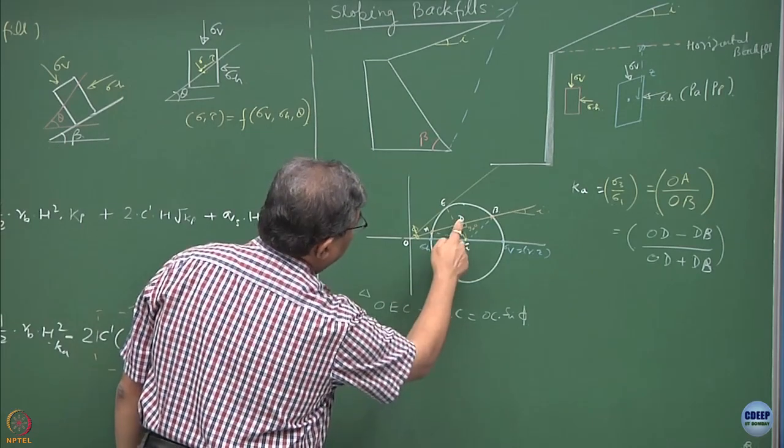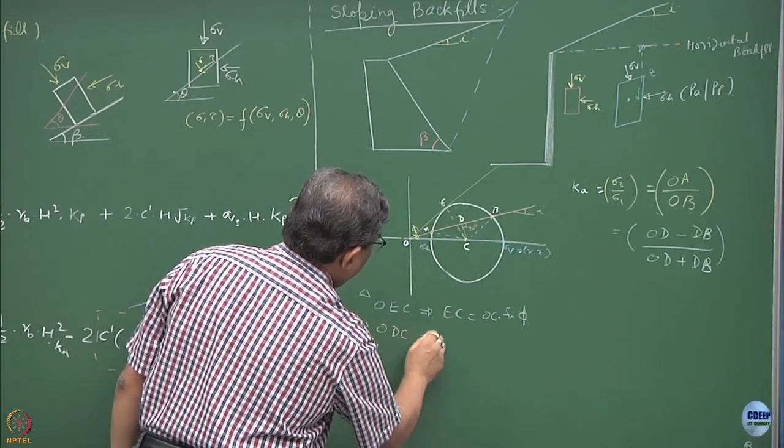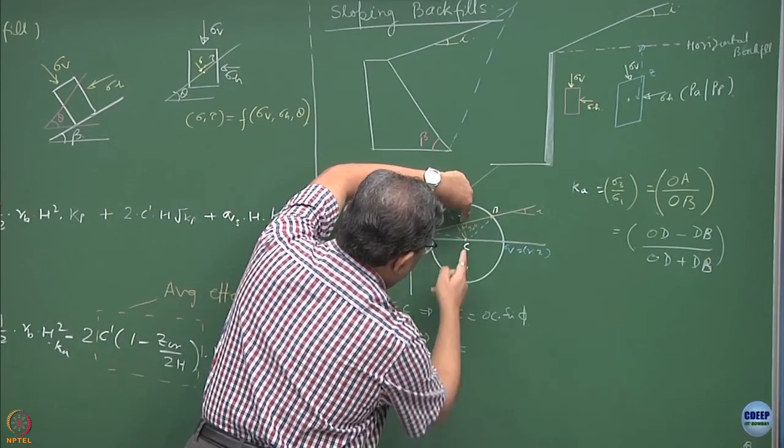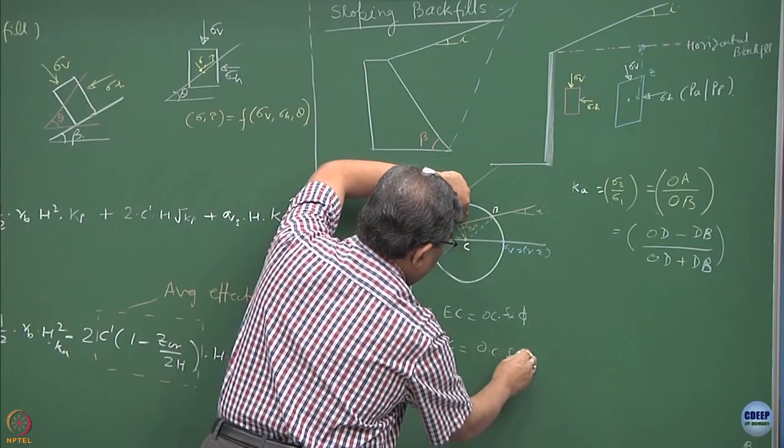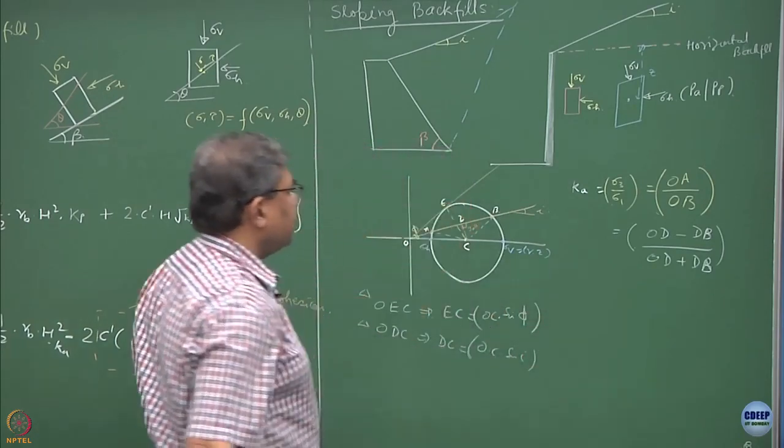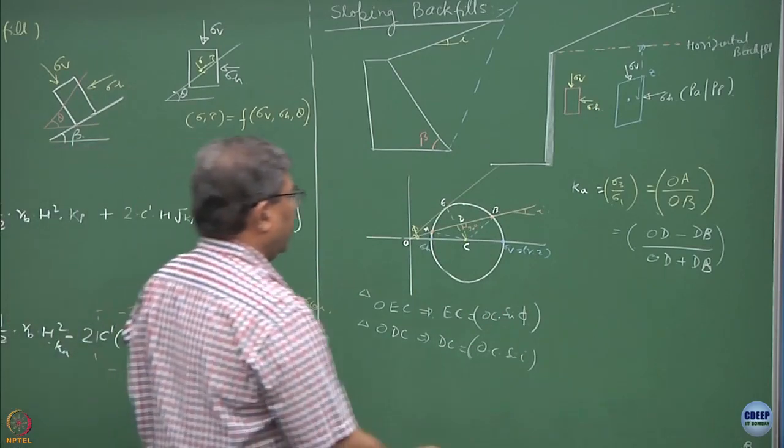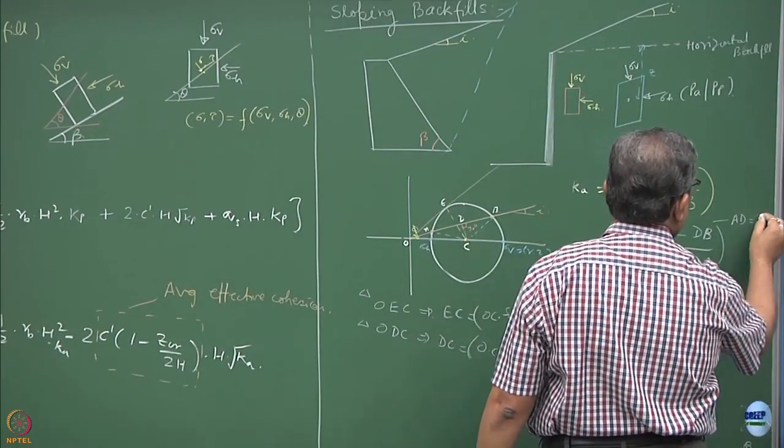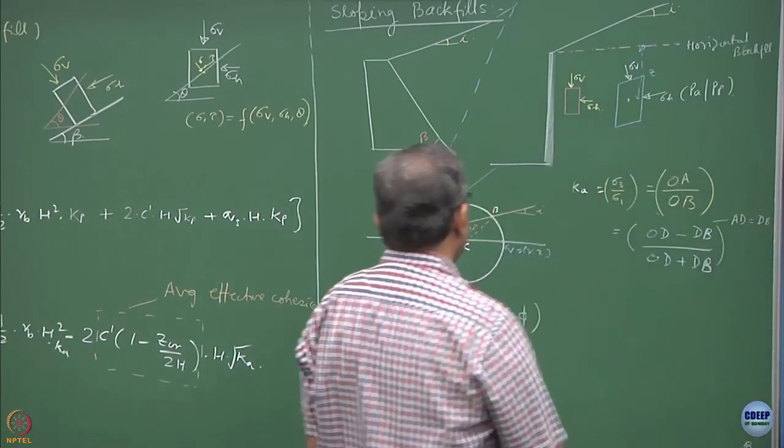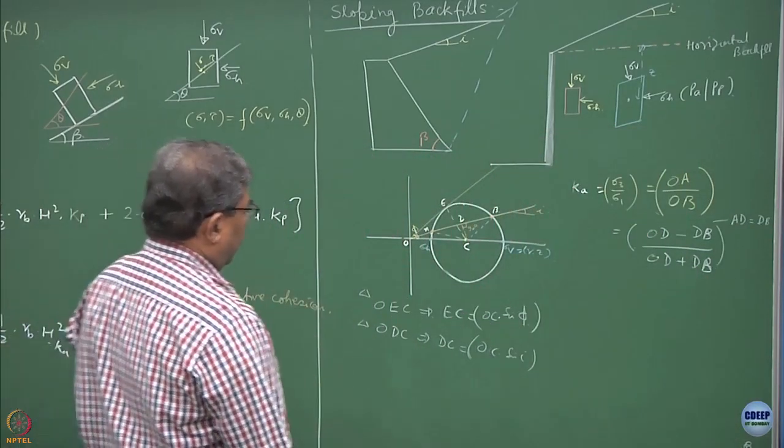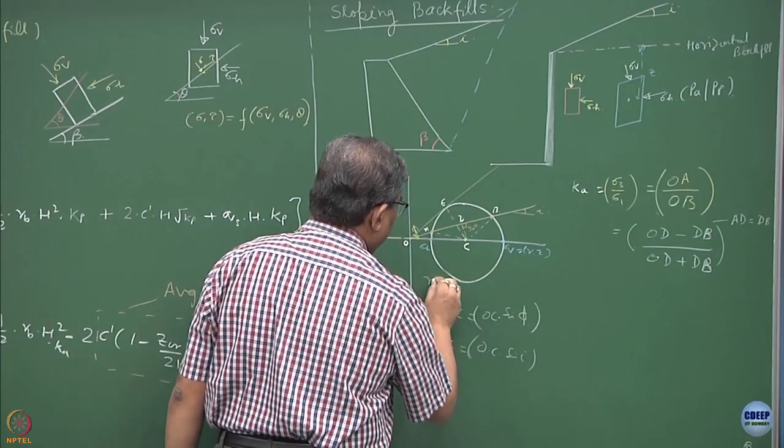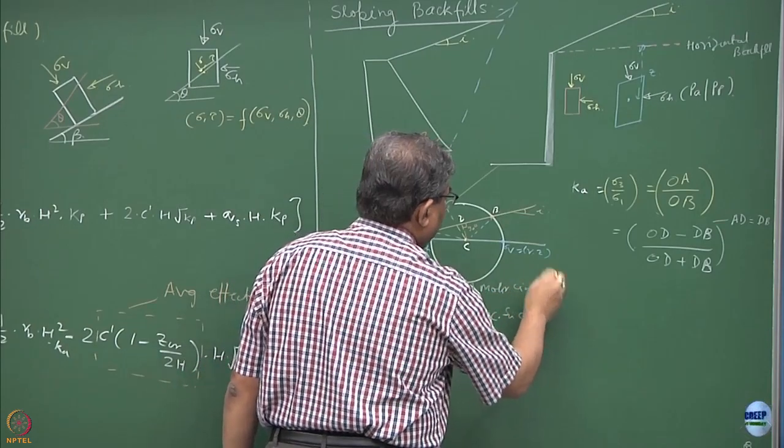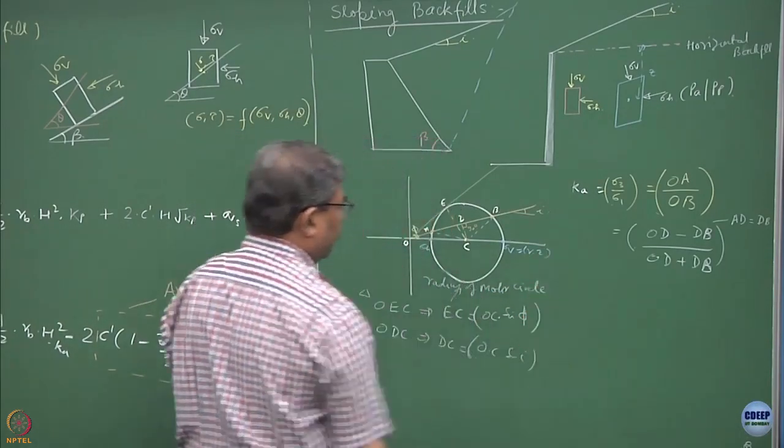From triangle ODC, we can obtain DC equal to OC sin of phi and remember, here we have used the equality AD equal to DB. EC is nothing but the radius of the circle.